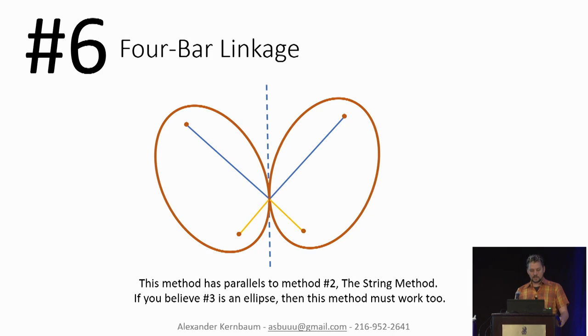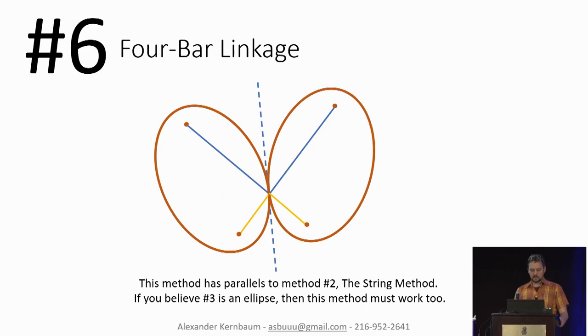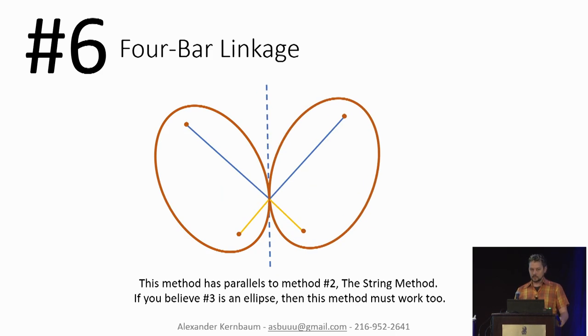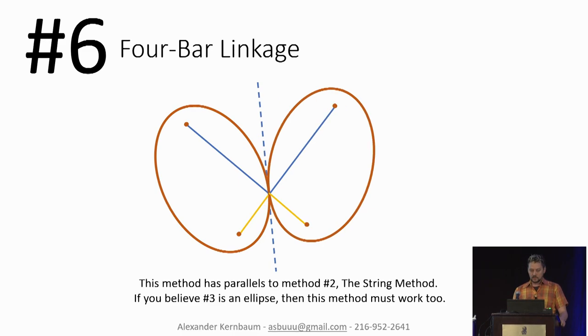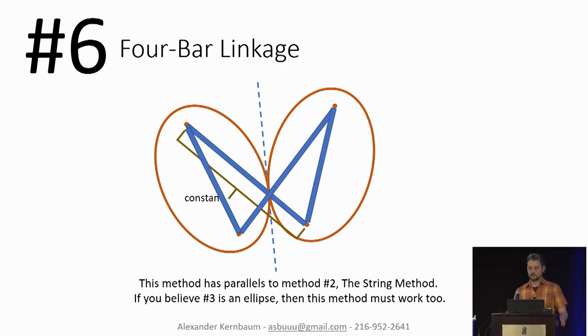There's actually a really neat explanation. You can draw a tangent line to both ellipses there, and that tangent line also acts as a line of symmetry. And if you remember the definition of an ellipse where the blue line plus the yellow line equals a constant, because of the symmetry, you can see that the yellow line on the opposite ellipse is constant as well. And so what that means is that that length right there is constant, and if that length there is constant, you can replace it with a rigid linkage, essentially.